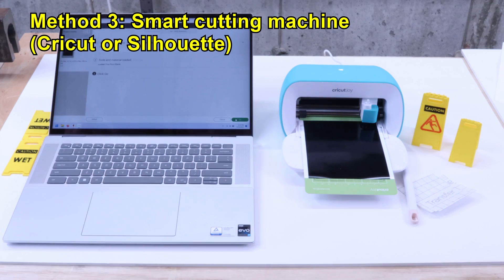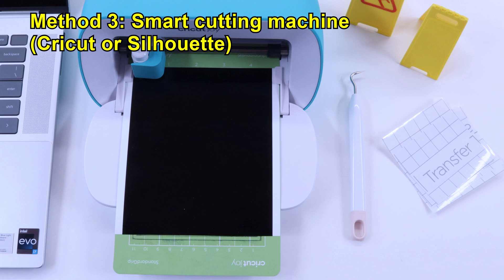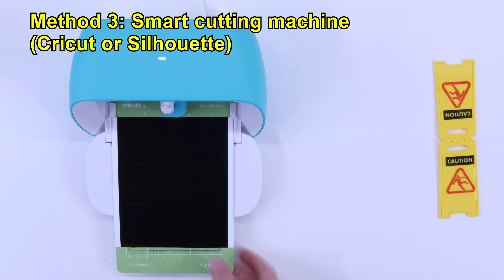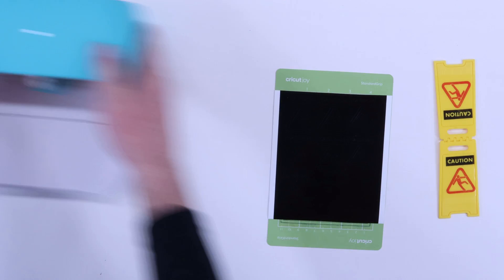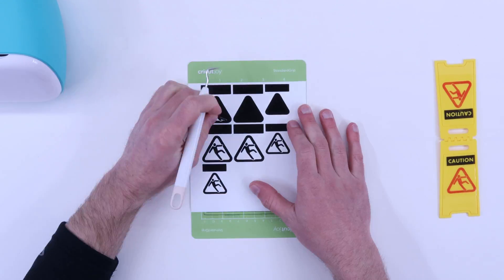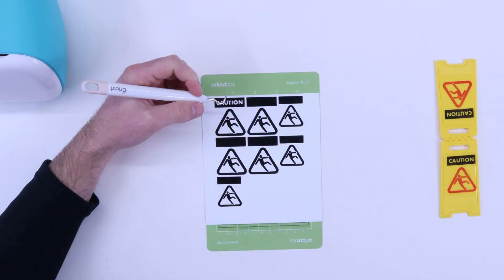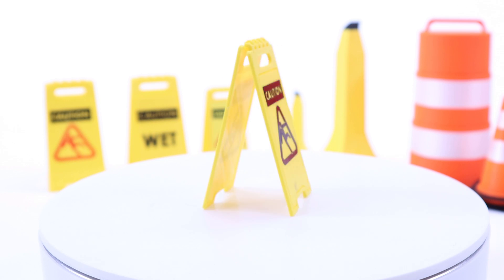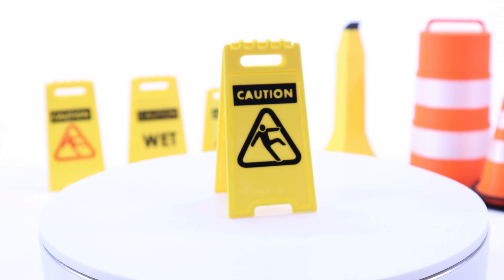For the next method I used a Cricut to cut out custom vinyl stickers. This is a Cricut Joy and I really like it. It has enough capability for most of what I need it to do and these aren't all that expensive. The process is quite easy. The Cricut cuts out a vinyl sticker I remove the unneeded vinyl and place it on the print.